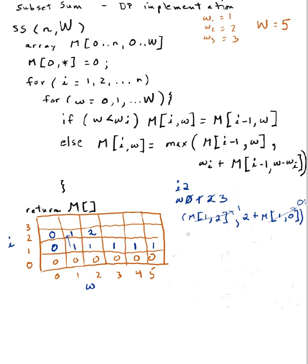w goes to 3. Is 3 less than 2? No. So m[2][3] will be assigned the max of m[1][3] or w sub 2 which is 2 plus m[1][3 minus 2] which is m[1][1]. m[1][3] is 1 and m[1][1] is 1. So I'm choosing between 1 or 2 plus 1, giving 3. So m[2][3] equals 3.